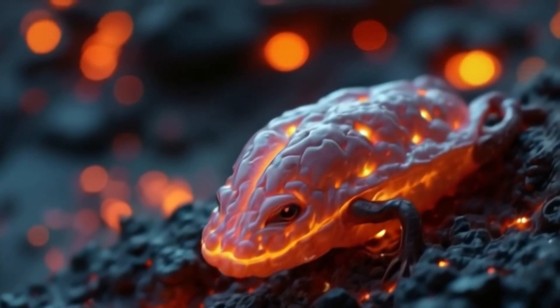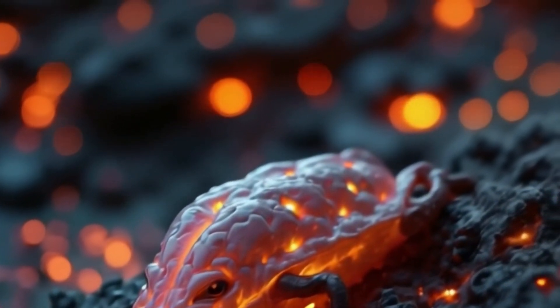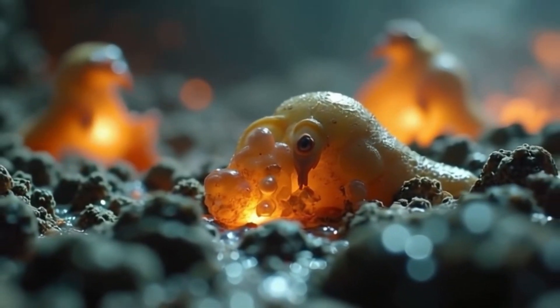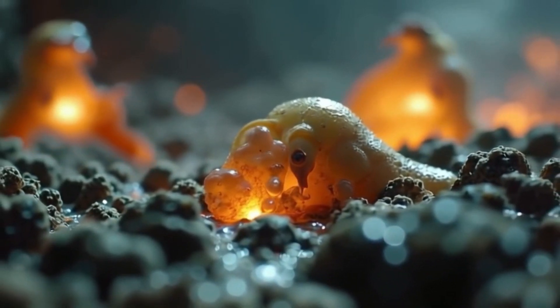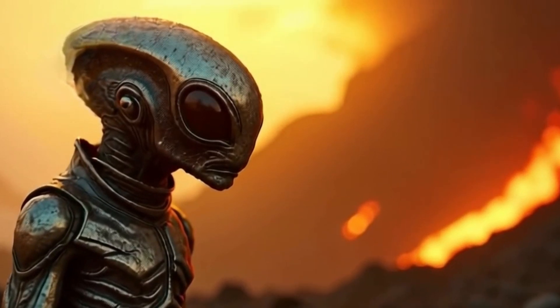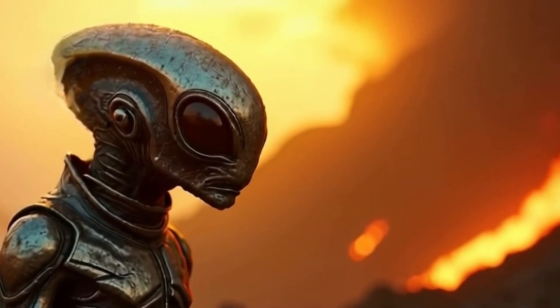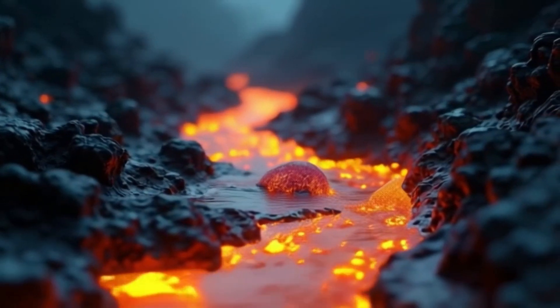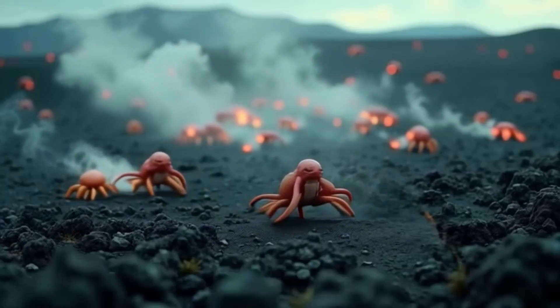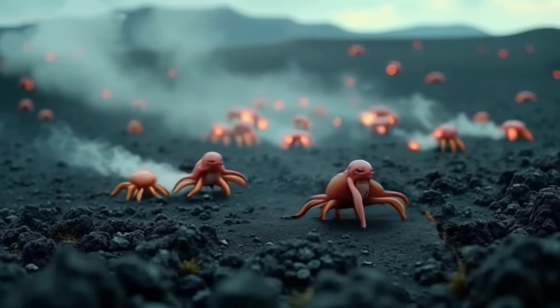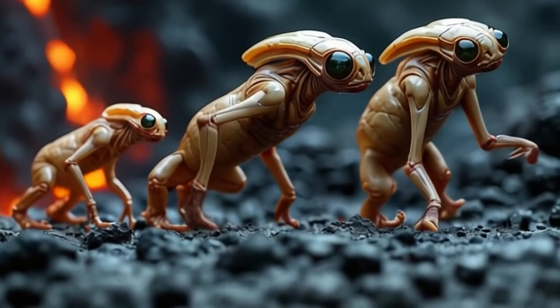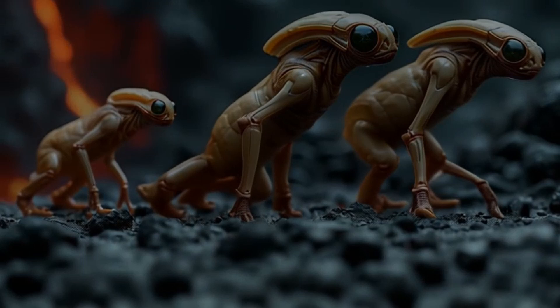These creatures could be silicon-based, with structures designed to endure extreme heat and radiation. Instead of oxygen, these life forms might rely on sulfur or methane to fuel their metabolism. Creatures could evolve reflective exoskeletons or shields to survive the planet's harsh conditions. Organisms might live within the molten rivers, adapted to the ever-changing, fiery landscape. Volcanic gases, rich in hydrogen and sulfur, could fuel vibrant alien ecosystems.